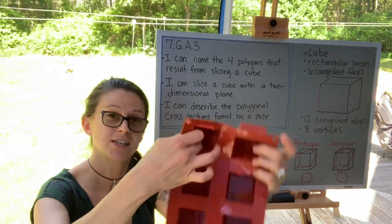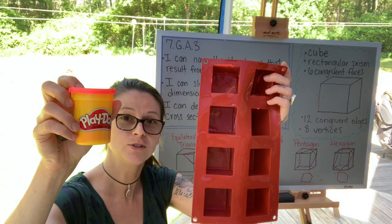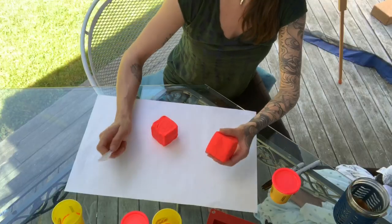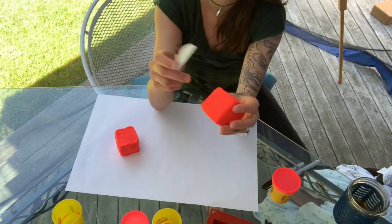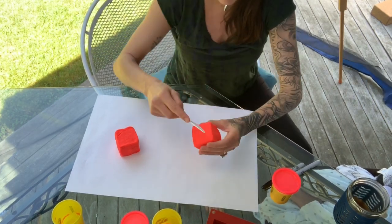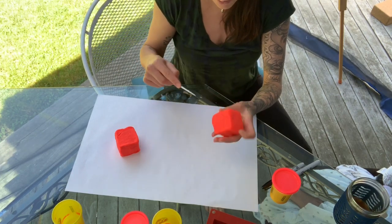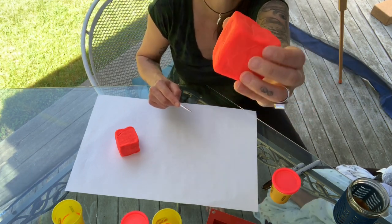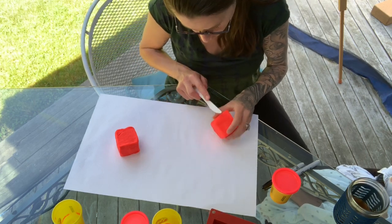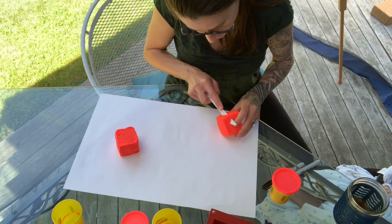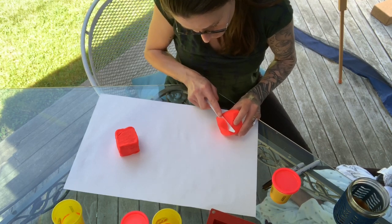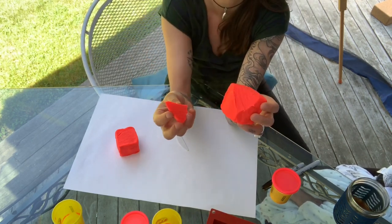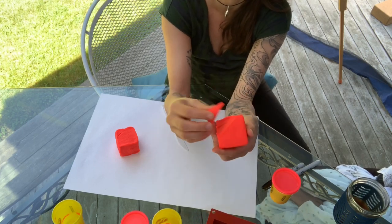Now we're going to use the silicone tray and play-doh to demonstrate how we can actually form these slices with a physical model. First we're going to look at the triangle — to do that we want to cut through exactly three faces. I always suggest scoring the faces before you begin to cut; you can see it's going to form a triangle. Now that I have the score, I know exactly what angle to cut on, and I can use this serrated plastic knife to cut through. There I have a triangle — one of the cross sections of a cube, formed by cutting through exactly three faces.